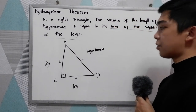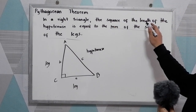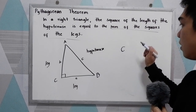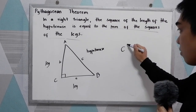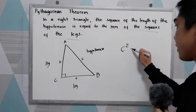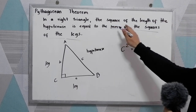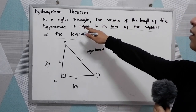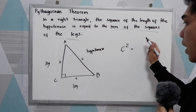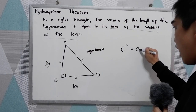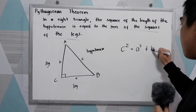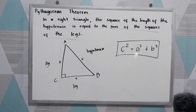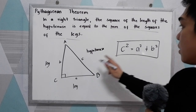Now, following our theorem, the square of the length of the hypotenuse — so c squared — is equal to the sum of the squares of the legs: a squared plus b squared. This will be our formula. So c squared is equal to a squared plus b squared.